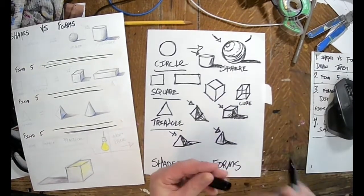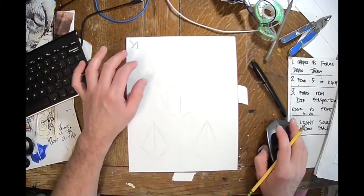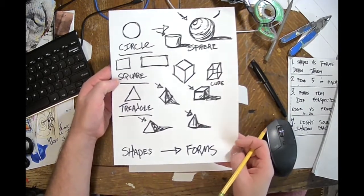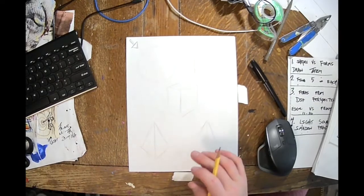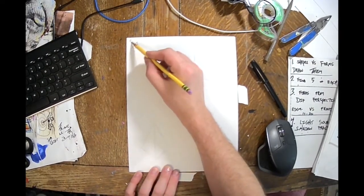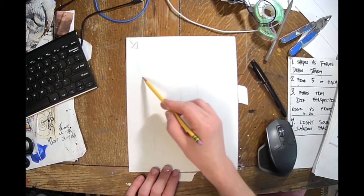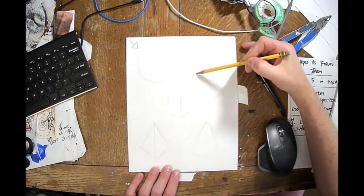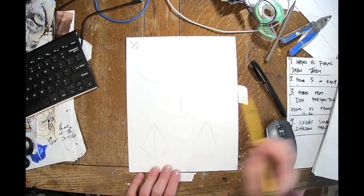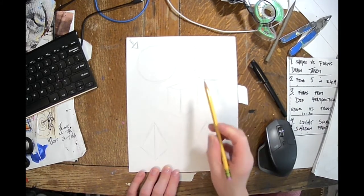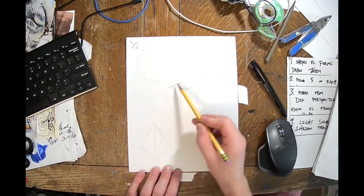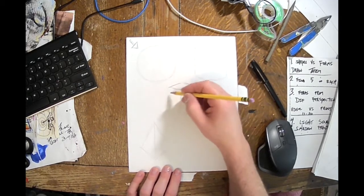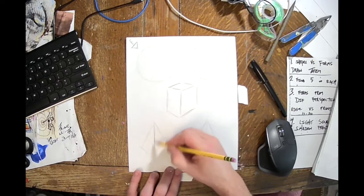So there's your assignment: shapes into forms. I will attach some more examples of what this could look like. Again, I'm drawing in sharpie so that it's nice and clear. I would use a pencil. I did this in sharpie to explain the light source idea. As far as how to organize your paper, I think it's best to do it like this. Here's my sphere, here's my cylinder.